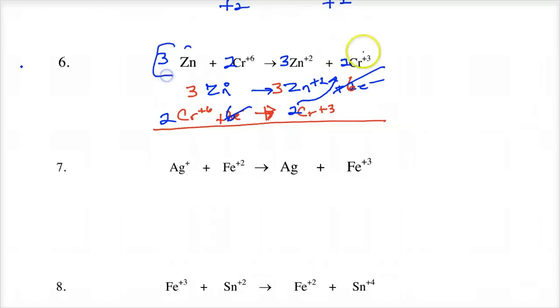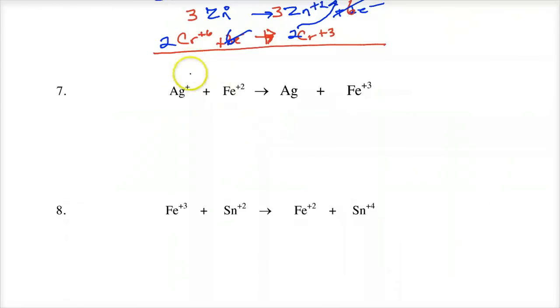And if you check, two chromiums, two chromiums, this is plus 12 altogether, and we need to have plus 12 on this side. So two times three is plus six, three times two is plus six, and we have the same mass and same charge on both sides, both sides plus six. I'll quickly finish this out.